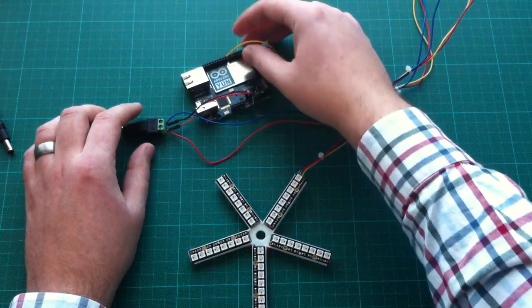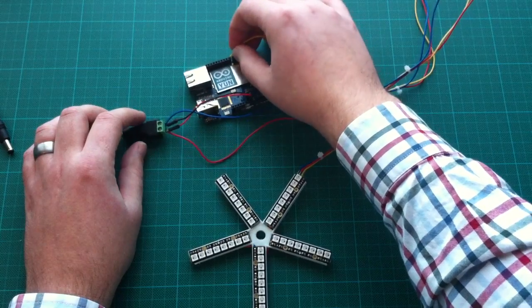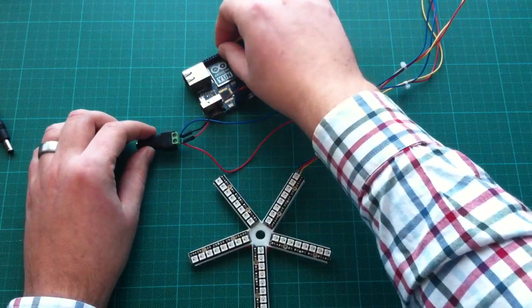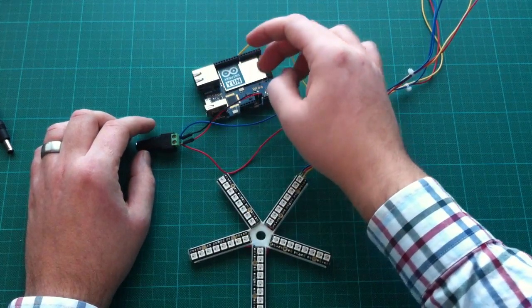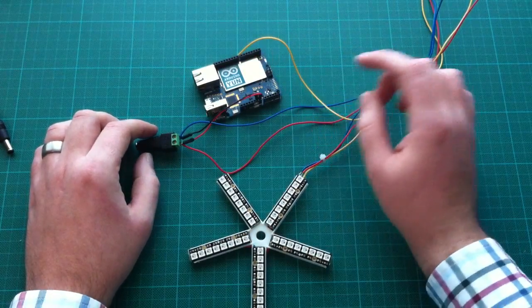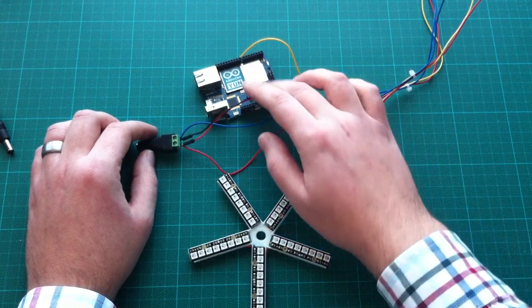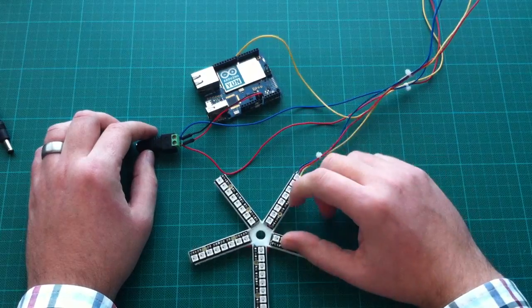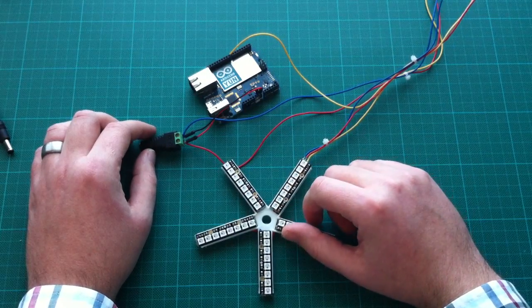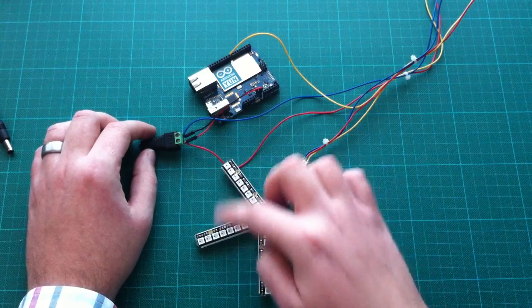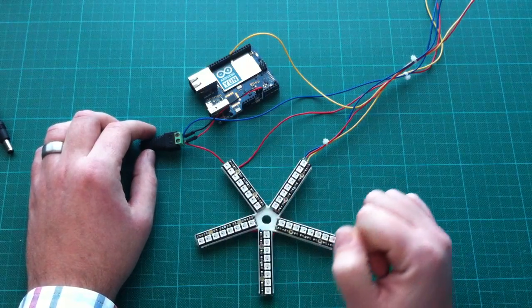The good thing about Adafruit NeoPixels is that they only use one data line. So you provide power and one data line, and using their library, you are able to animate the pixels very easily. I've loaded the default sketch from Adafruit to test an LED strip. I configured the number of pixels to 40, because I have five sticks of 8 pixels each.